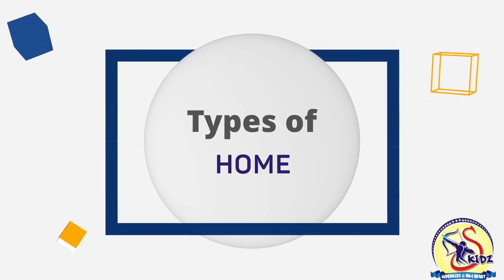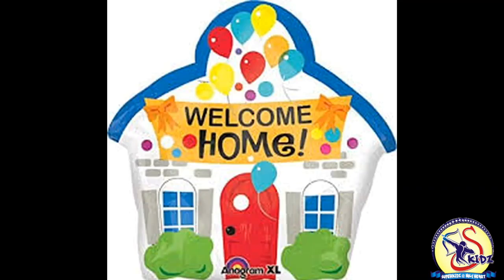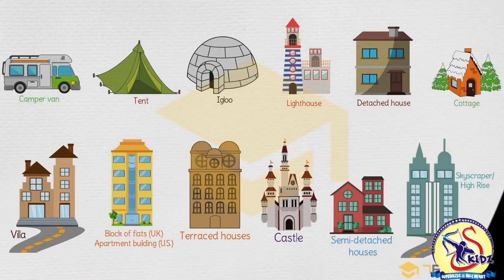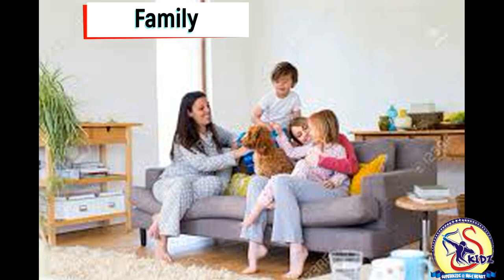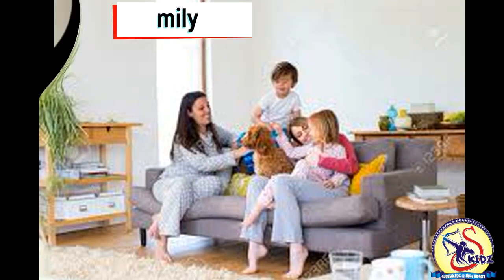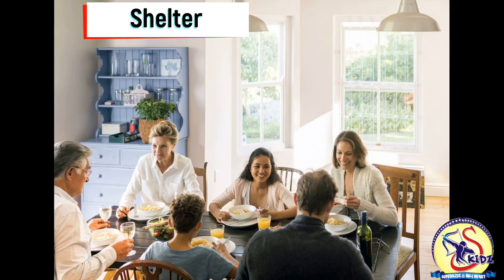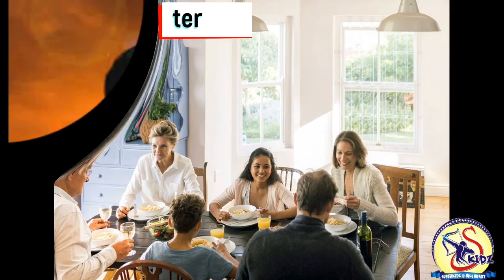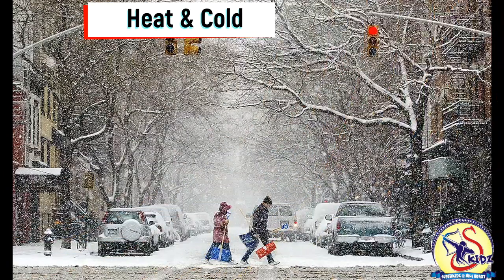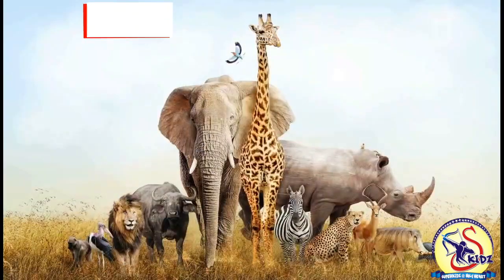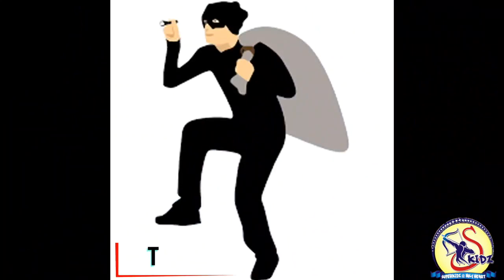Hello kids, hoping all of you to be fine. Today we are going to discuss about different types of homes. A home is a place where we live with our family. Our home is a place that gives us shelter — it protects us from heat, cold, storm, wild animals, and thieves.